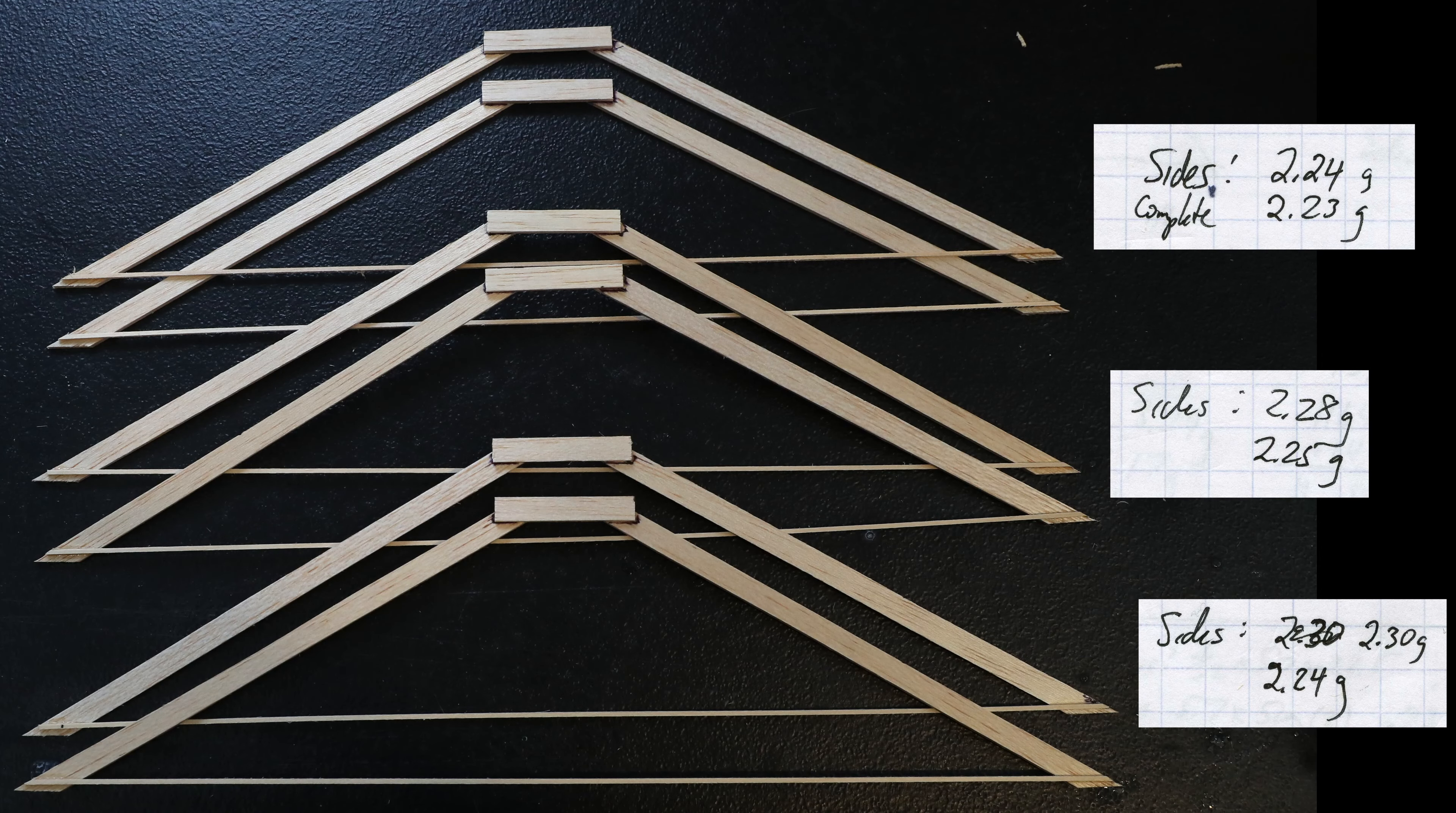To try and isolate the cross bracing support as much as possible I needed to create three bridges where the only difference was the cross bracing. I also wanted to use reasonable mass legs so they wouldn't influence the results too much. Here you can see the results of just the sides. I was very happy to be able to get them this close to each other.